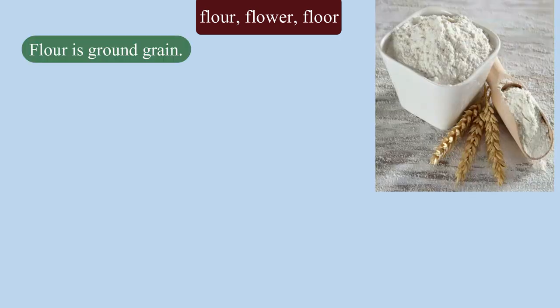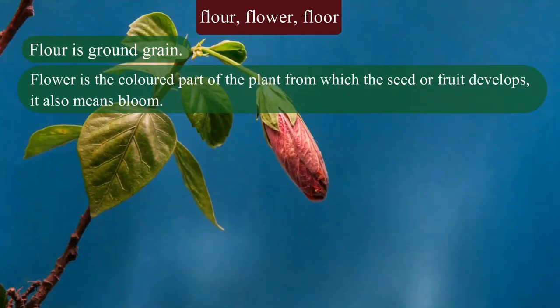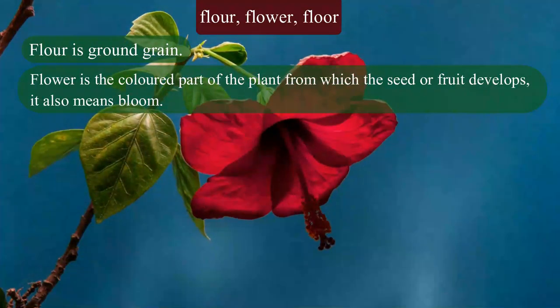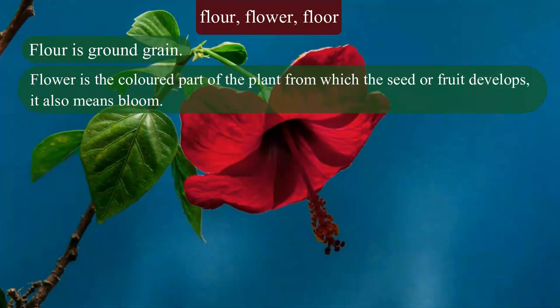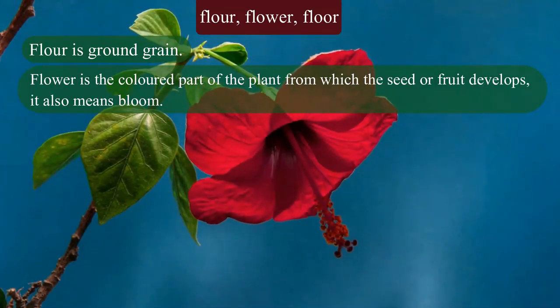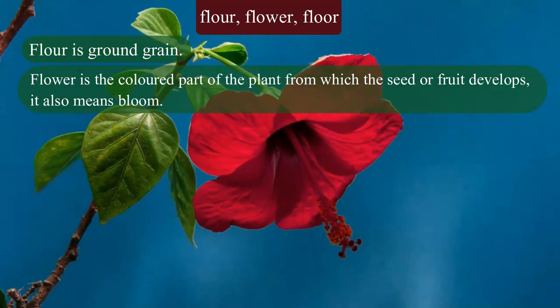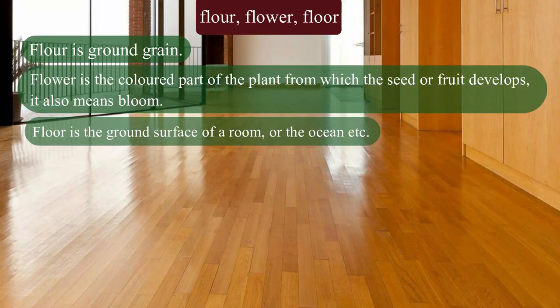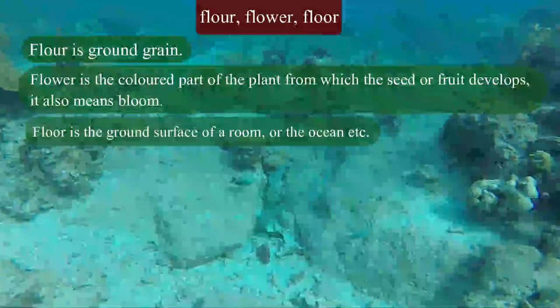Now look at these: flour, flower and floor. Flour is ground grain. Flower is the coloured part of the plant from which the seed or fruit develops. It also means bloom. Floor is the ground surface of a room or of the ocean.